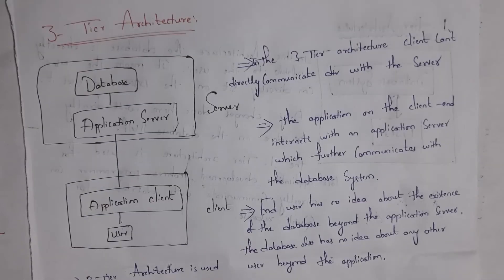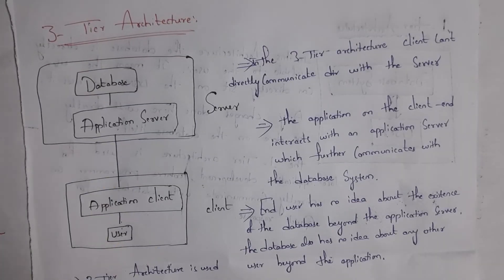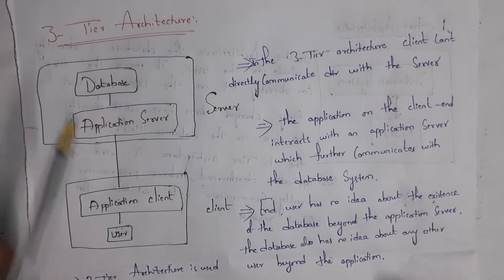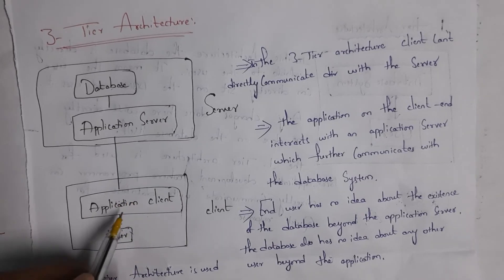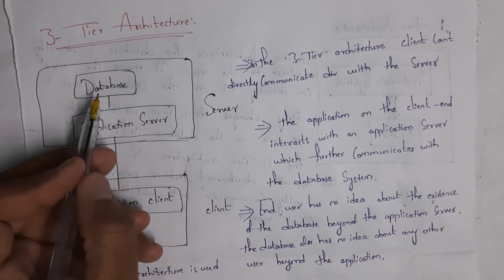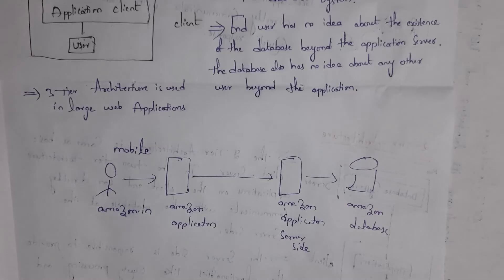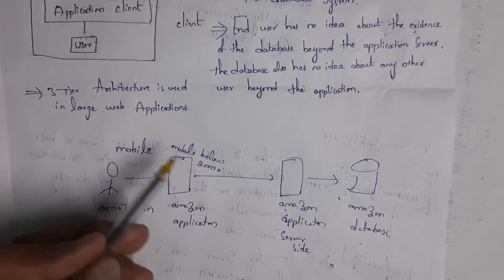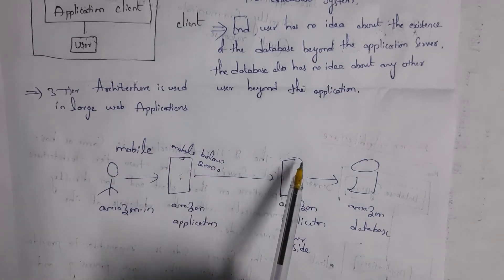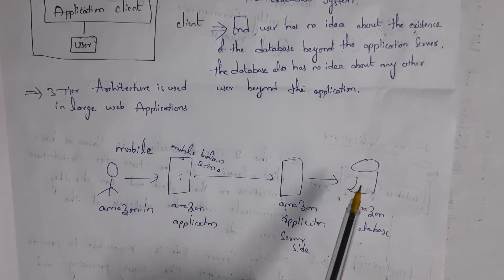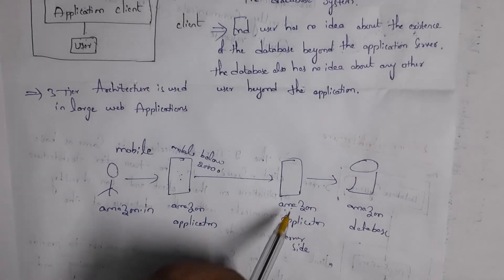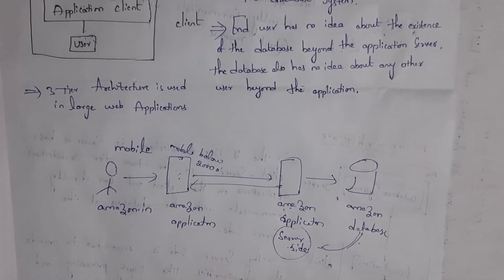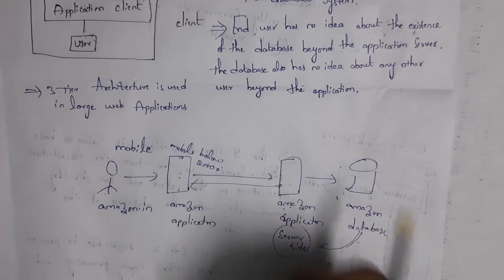Next, I will explain three-tier architecture. Whereas in two-tier architecture the user can directly interact with the database using software, in three-tier architecture the user cannot interact with the database directly because there is software on the client side and also software on the server side. For example, I open the Amazon application to purchase a mobile and search for 'mobiles below 20,000'. My request is first transferred to the Amazon application on the server side — it does not go directly to the Amazon database. This server-side application collects complete details about mobiles below 20,000 and displays them to the user. This is a simple example of three-tier architecture, where the user, user application, server application, and database are all involved.